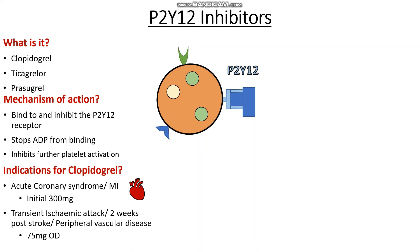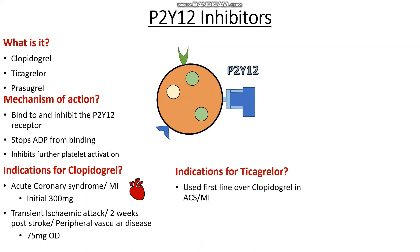What about ticagrelor? Well, ticagrelor seems to have replaced clopidogrel in terms of use alongside aspirin in ACS and MI. In fact, it is now the first-line drug to be used in the case of an acute coronary syndrome or an MI alongside aspirin, and we use a dose of 180 milligrams one-off — not 300 milligrams. Following this, we actually continue the ticagrelor for around about 12 months, especially if the patient has had a percutaneous coronary intervention, which is essentially when we send a tube up the patient's radial artery in an effort to open up the coronary artery blocked off by a thrombus.